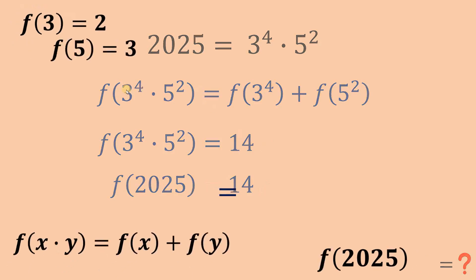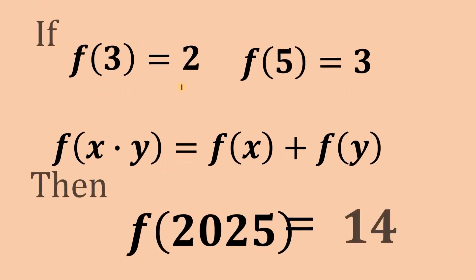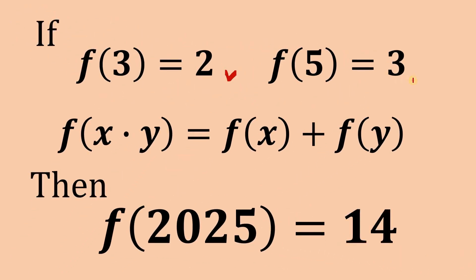Therefore, f(3⁴ times 5²) equals 14. Furthermore, f(2025) simply equals 14. So our answer: given f(3) equals 2, f(5) equals 3, and the function f(xy) equals f(x) plus f(y), the numerical value of f(2025) is 14. And as always, we are done.